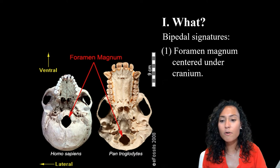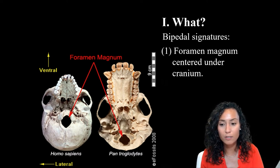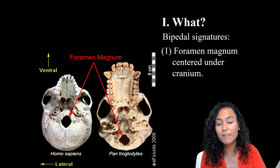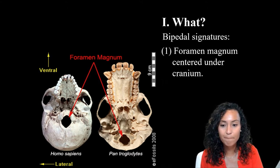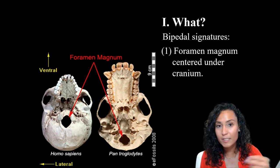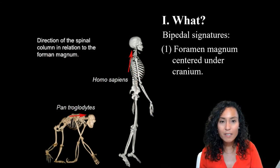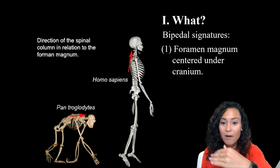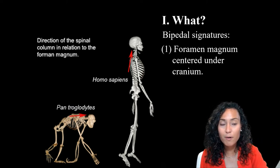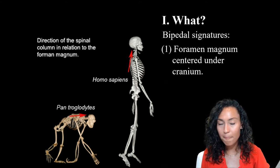There are several core anatomical features that characterize our ability as humans to walk on two feet, and I'll talk briefly about six of the major ones today. The first big one is the placement of the foramen magnum, which is that large hole on the back of your cranium through which the spinal column passes. In quadrupeds, the spinal column runs parallel to the ground so that the foramen magnum is placed more towards the back of the skull.